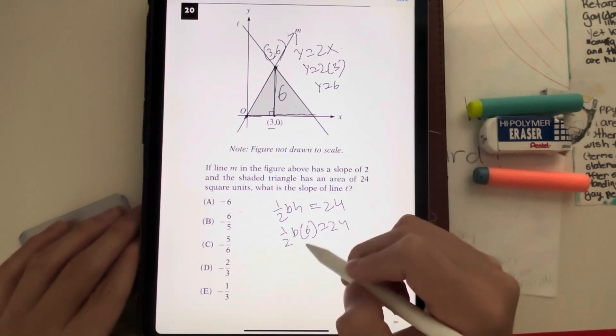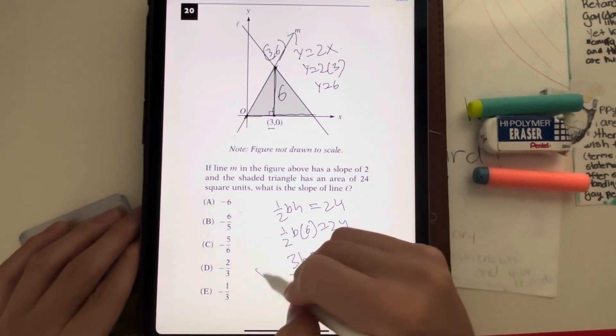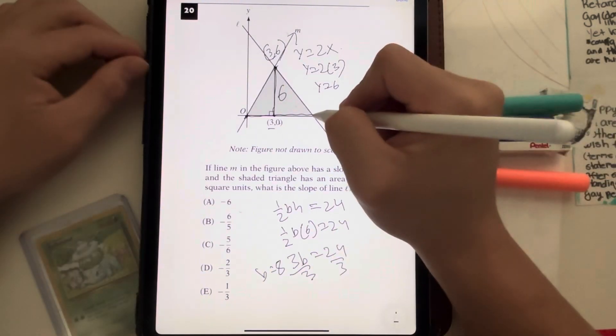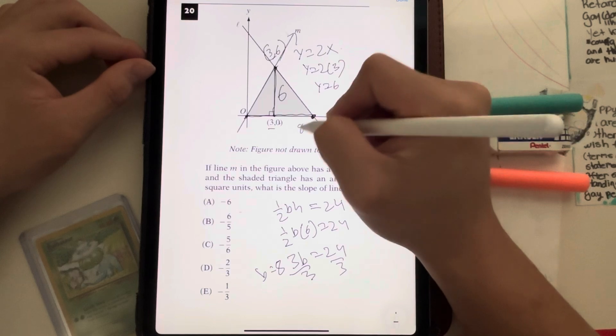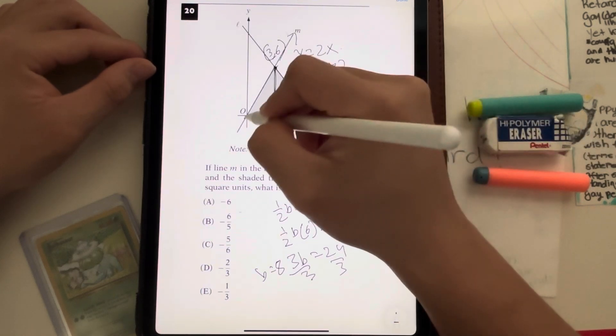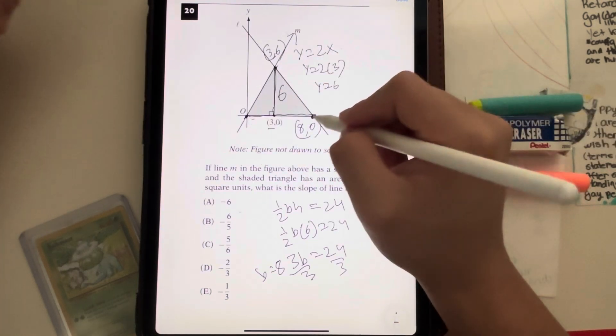Simplify, 1 half times 6, 6 divided by 2 is 3. 3b is equal to 24. Divide both sides by 3, I end up with the base is equal to 8. It means that this coordinate right here has to equal 8, 0. Because from here to here, it's 8 units, so it's just 8, 0.